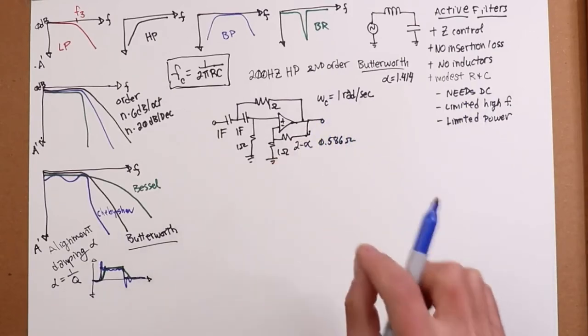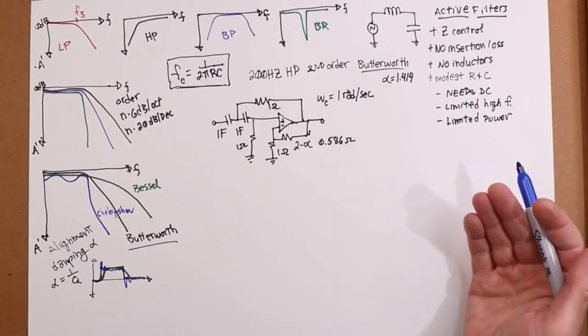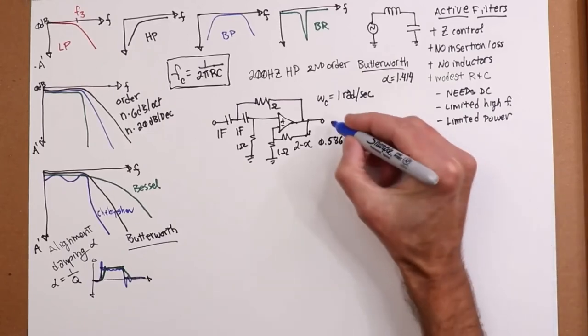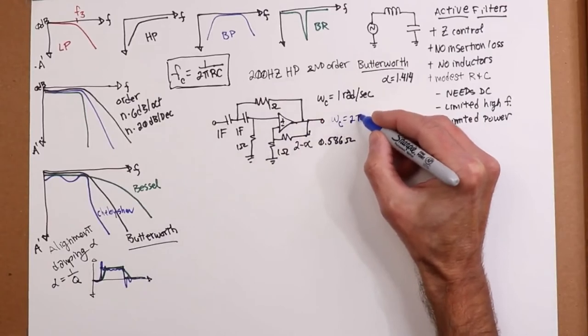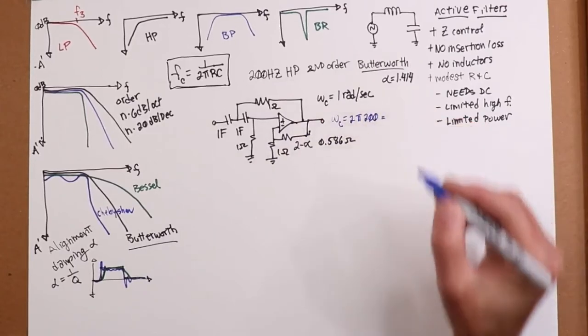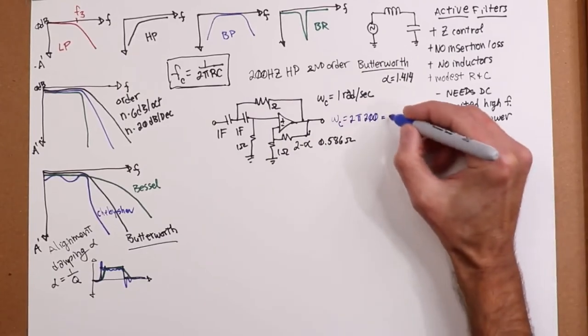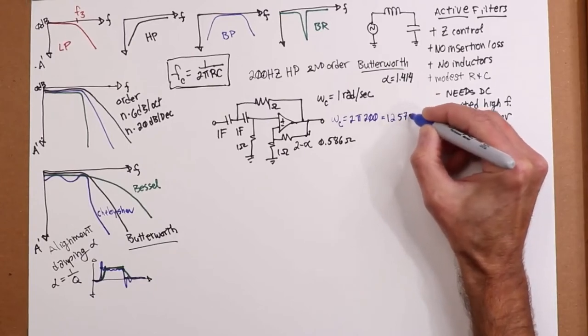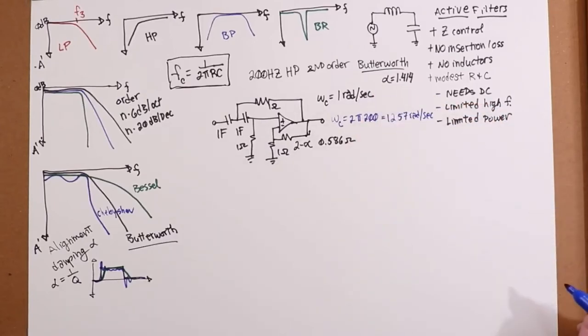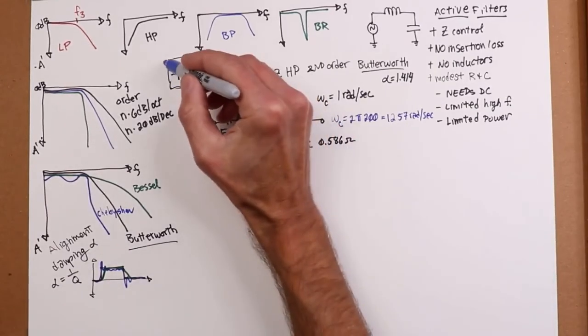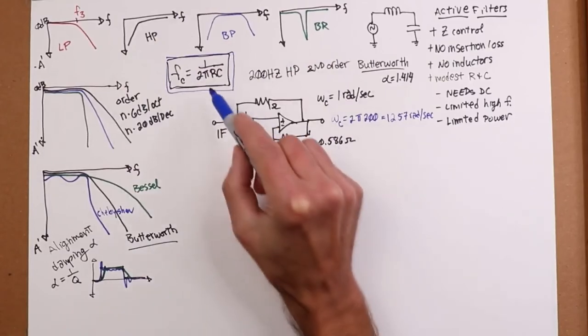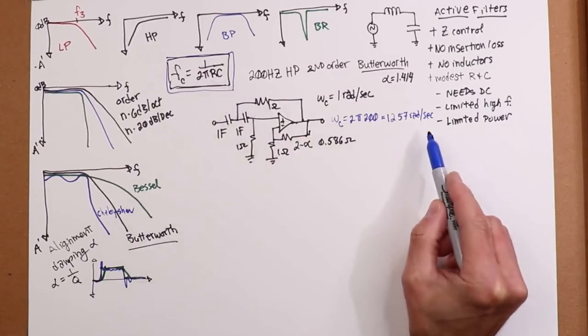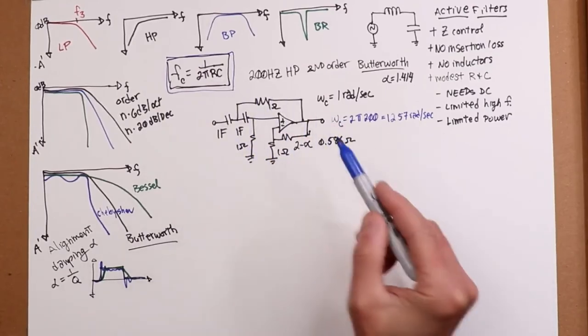Now here's the thing. What is the radian frequency that we want? We want 200 hertz. So what is my omega C for my 200 hertz? Well, it's 2 pi F for omega, so that's going to be 2 pi times 200 hertz. So 400 pi is roughly 1257 radians per second. What we have is 1 radian per second. So I basically need to shift this by 1,257.